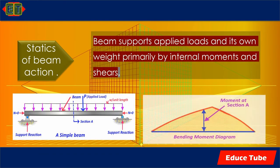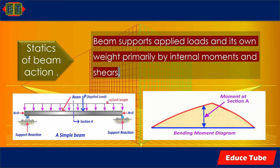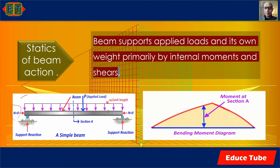A beam supports applied loads and its own weight primarily by internal moments and shears. Since the axial load N equals zero, this is a beam — a structural member that supports its own dead weight W per unit length plus a concentrated load P.